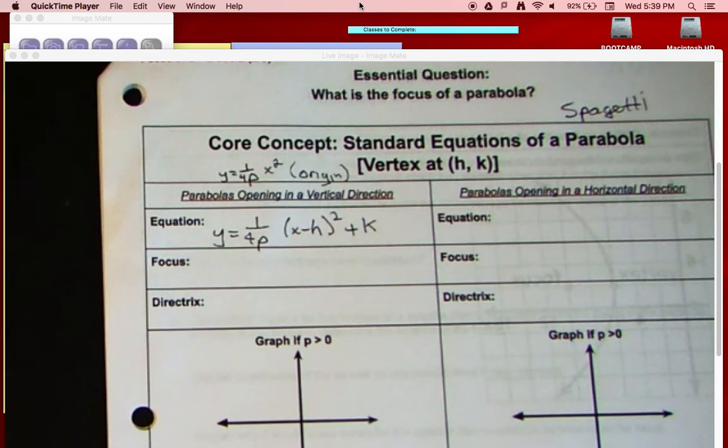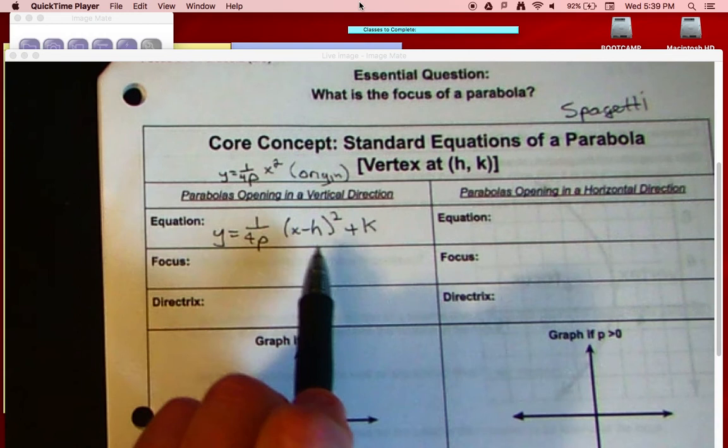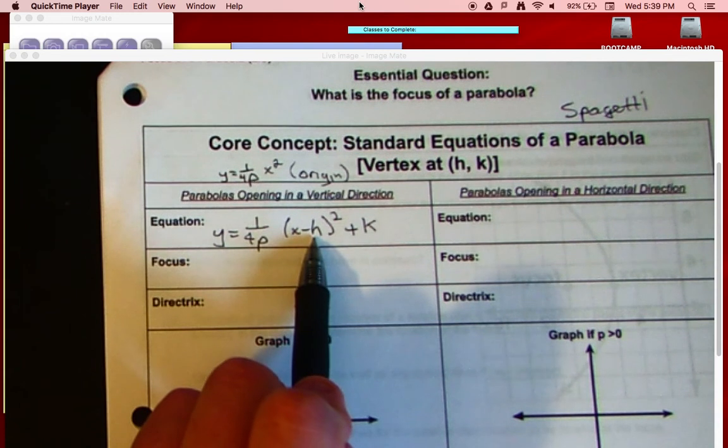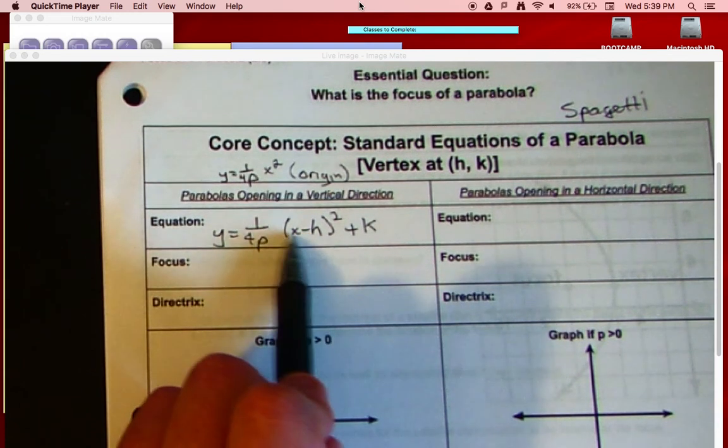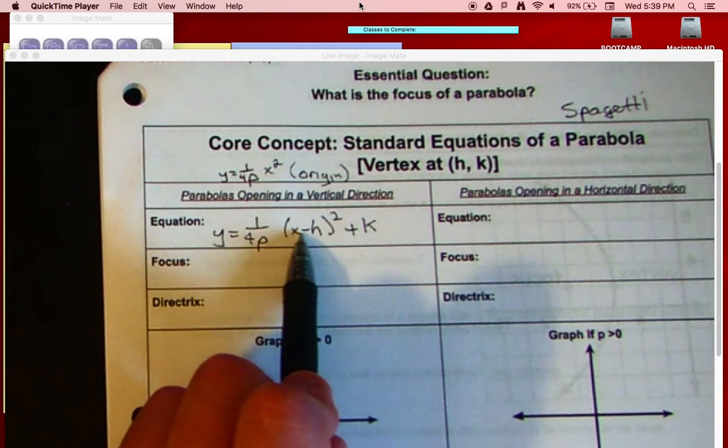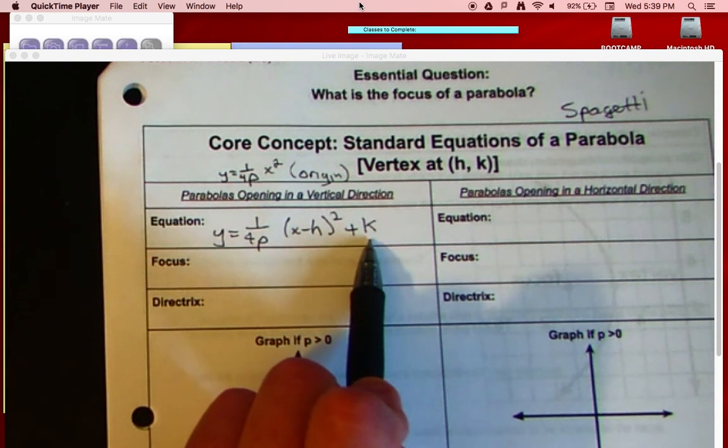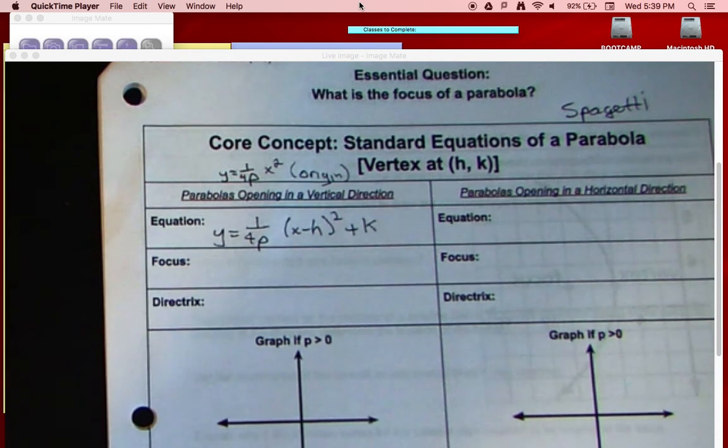Now think what that means - translations. Here it's going to be moving left and right, our h once again, taking and adding and subtracted directly to our x variable on the inside, and we're moving it up or down, so that's our k, very similar to transformations.